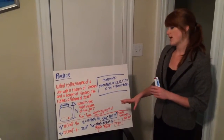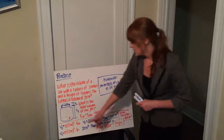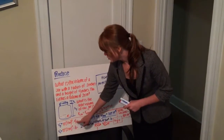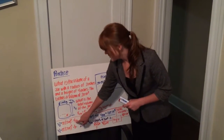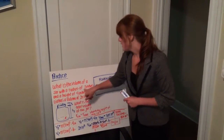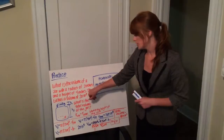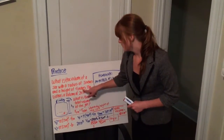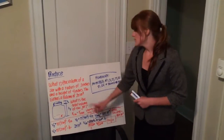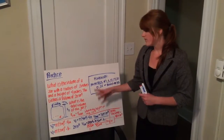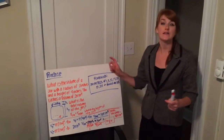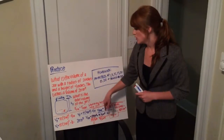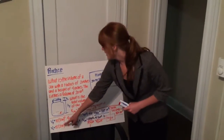Let's first look at the volume of the jar. Our volume of the jar equals pi r squared times height. We know our radius is 2 inches, so 2 inches squared, and our height of the jar is 4 inches. Now let's find the height of the lid — we know the lid's volume is 2 pi inches cubed, and our radius is the same.